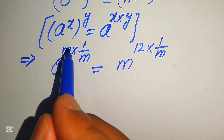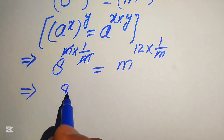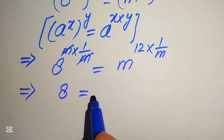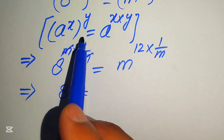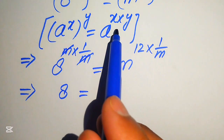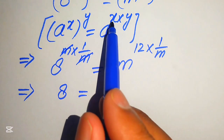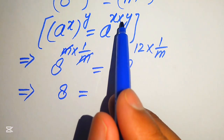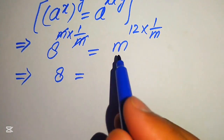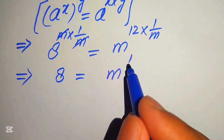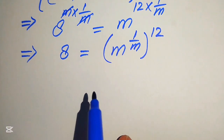On the left hand side, m and m cancel each other, leaving just 8. On the right hand side, we apply the exponent law in reverse: a to the power of x times y can be written as a to the power of x, to the power of y. So we move 1 over m inside the term, giving us m to the power of 1 over m, and its whole exponent is 12.